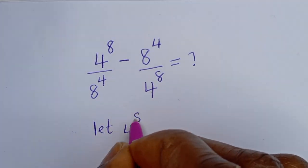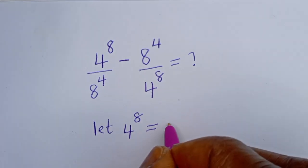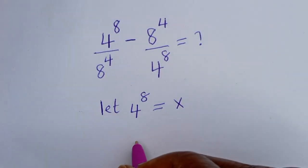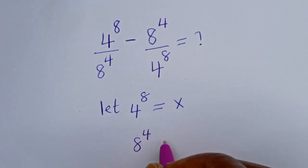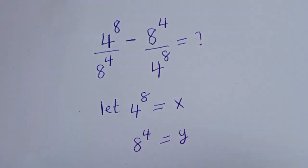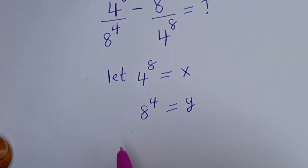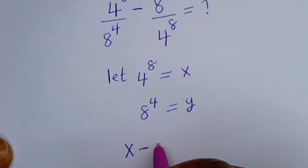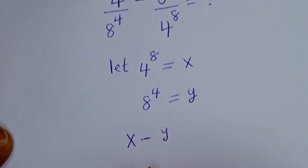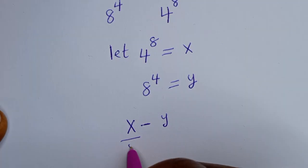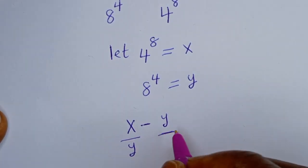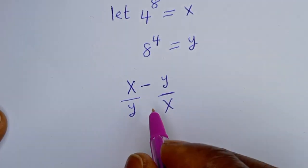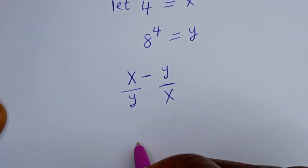Let 4 to the power of 8 be equal to x, and 8 to the power of 4 equal to y. Then we have x over y minus y over x. If you look at this, the common denominator is xy.